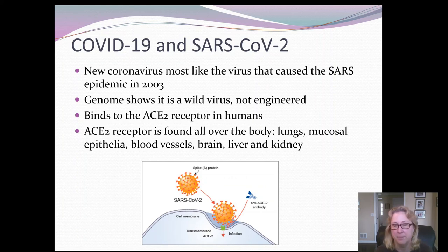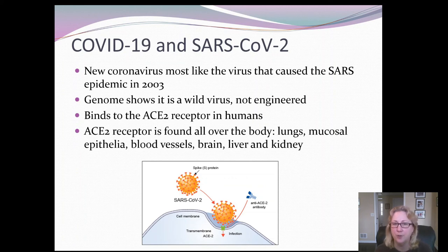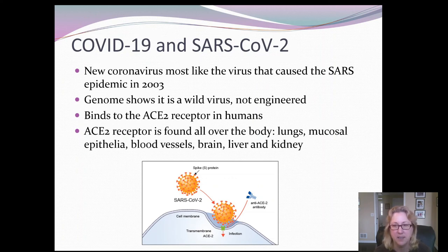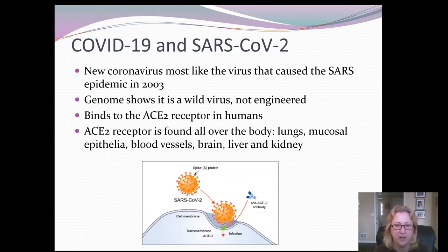This particular virus is different because it binds to ACE2 receptors. ACE2 receptor expression may explain why young people seem unaffected — very young children under five have fewer ACE2 receptors than adults. People with high blood pressure who take ACE2 inhibitors have more ACE2 receptors, which could be why they appear particularly vulnerable. ACE2 receptors are found all over the body: not just in the lungs, but also in the nasal cavity, sinuses, intestines, liver ducts, pancreatic ducts, blood vessels, brain, liver, and kidneys — which explains the wide range of organs affected in severe cases.